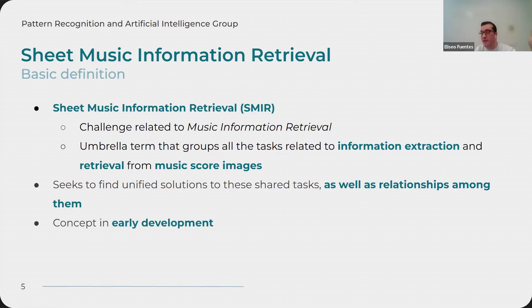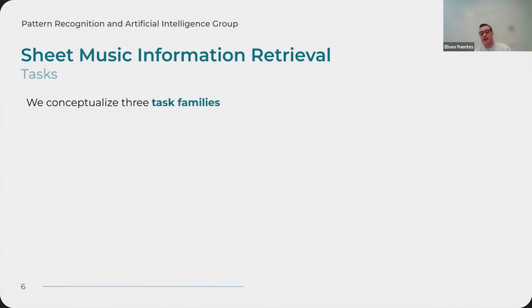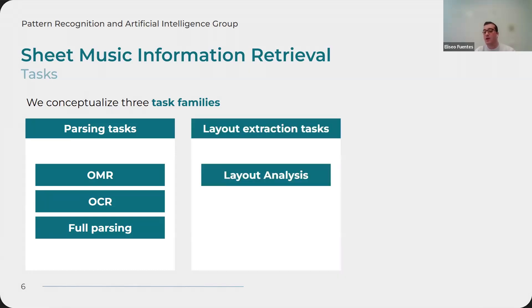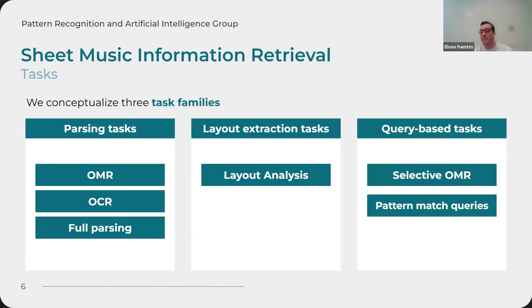It is a concept in very early development. In this paper, we define an initial set of tasks for that joint solution, conceptualizing three task families. First, parsing tasks that extract the transcription and content of music scores, such as OMR, OCR, and full parsing. Then, layout instruction tasks — layout analysis. And we identify query-based tasks, which are more interactive with users, specifically selective OMR and pattern matching. Pattern matching involves querying a pattern in the music score and identifying regions that contain that pattern.